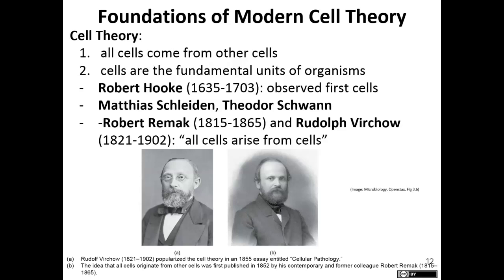The two tenets are that all cells come from existing cells, and that cells are the fundamental units of life. The cell theory was being produced at the same time as people were still arguing for spontaneous generation. Multiple individuals were important in supporting and producing the cell theory, including Robert Hooke, Matthias Schleiden, Theodore Schwann, Robert Remack, and Rudolf Virchow.